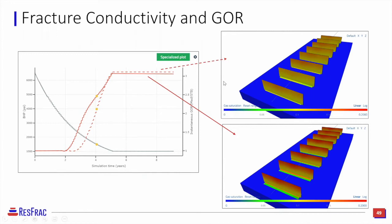It's an important nuance: when going through history matching, make sure the timing of the GOR increase is captured. In the 3D viewer, look at the pressure in your fractures versus your bottom hole to see whether you're at infinite conductivity conditions. In a field-scale simulation where you're actually simulating the fracture jobs and proppant placement, the parameters to control are K-naught, which is a linear multiplier to the proppant conductivity, as well as proppant trapping, which dictates how much proppant ends up in the near-well region.